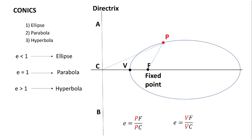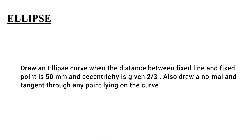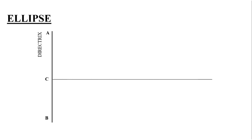Now let's start how to draw an ellipse by the directrix focus method. In this question, the distance between the directrix and the focus point is given, and the eccentricity is also given. The eccentricity is 2/3, which is less than 1, confirming it is an ellipse. We will draw the directrix as a vertical line and through any random point C draw a perpendicular axis line. From point C we measure 50 mm to mark the fixed focus point F on the axis line.